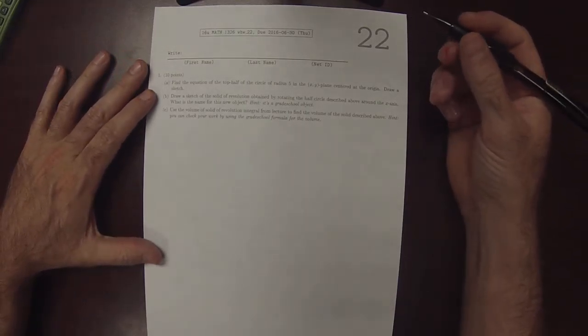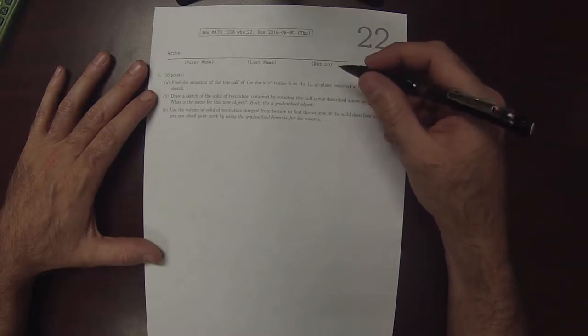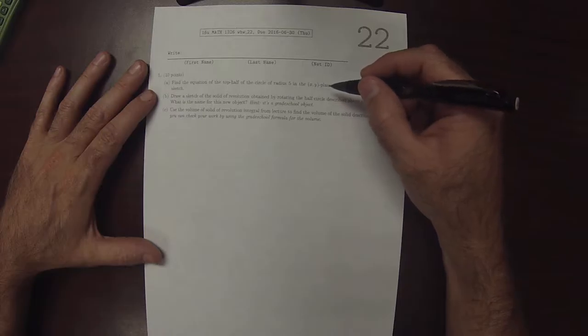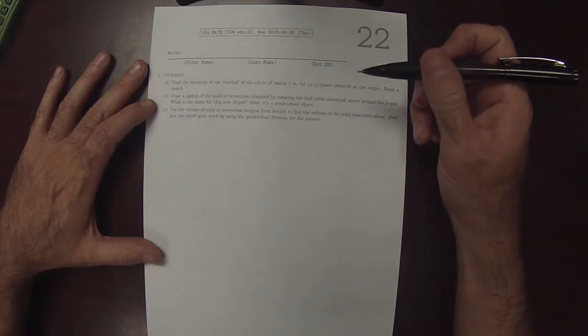This is the solution to Written Homework 22. In Part A, you're requested to find the equation of the top half of the circle of radius 5 in the xy-plane centered at the origin and to draw a sketch.